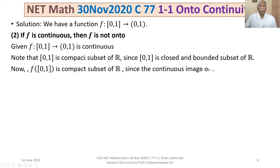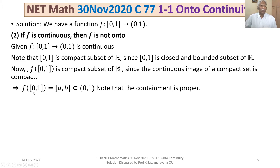Since f is continuous, and the continuous image of a compact set is compact, f([0,1]) is a compact subset of ℝ — in fact, a compact subset of (0,1). So f([0,1]) must be a closed interval, and the containment in (0,1) is proper. Therefore, elements in (0,A) ∪ (B,1) have no pre-images, so f is not onto.